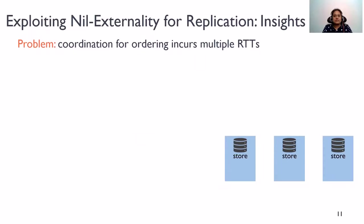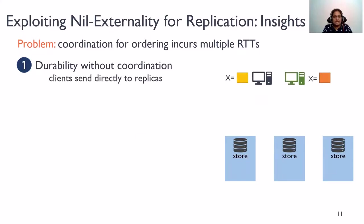Now, let's take a look at how we can exploit these nilext interfaces for fast replication. To recall, the problem with consistent replication is that updates incur multiple network round trips. So, how do we avoid these overheads? Our first insight is that to achieve durability, you don't need to coordinate among replicas. The clients can directly write the updates to the replicas. But ordering is expensive and requires coordination. So, is it possible to defer ordering?